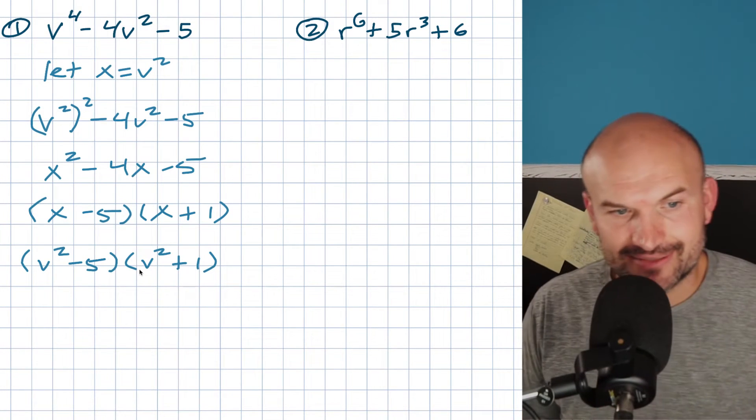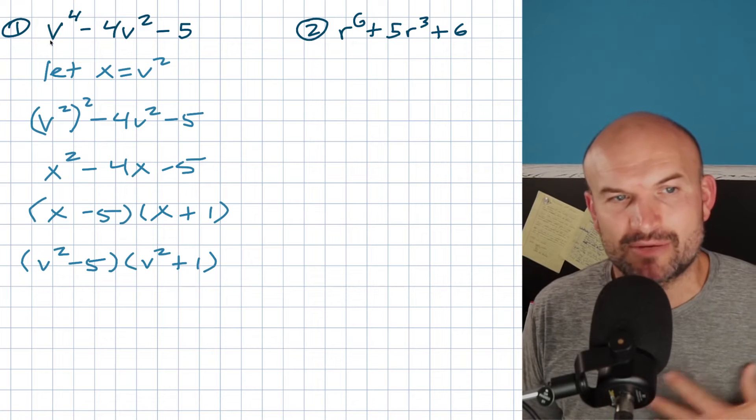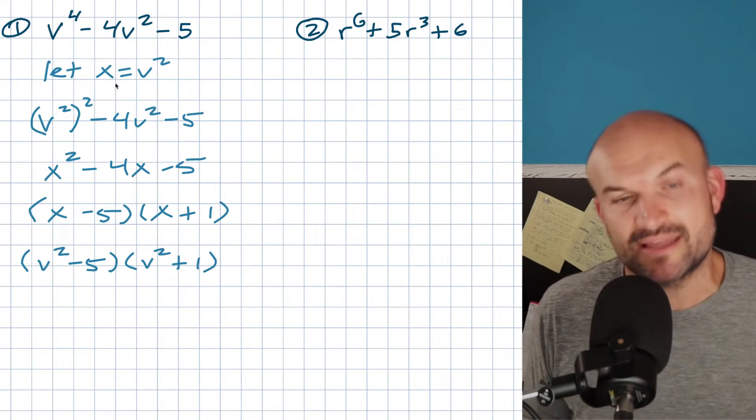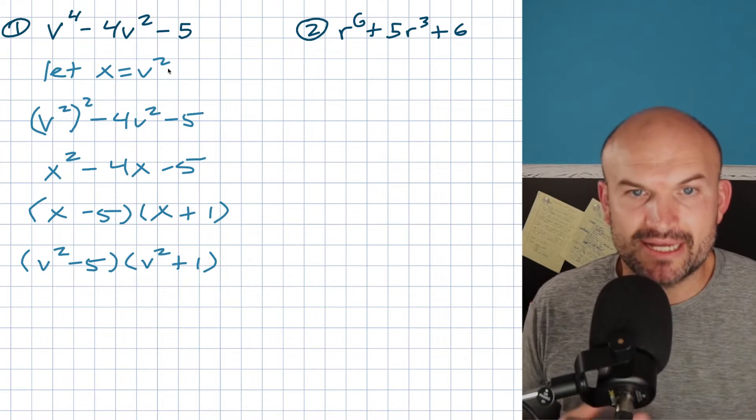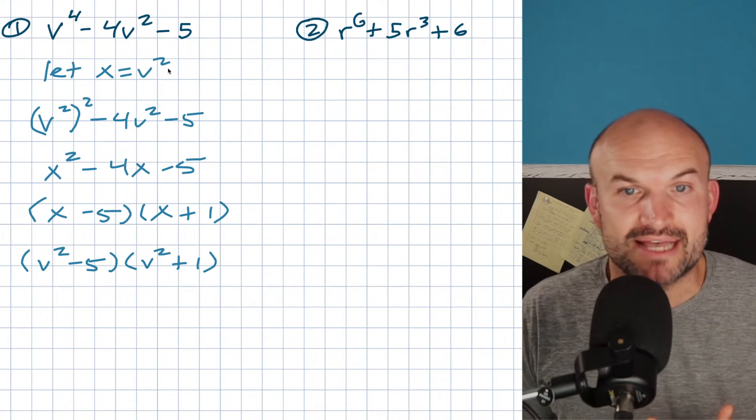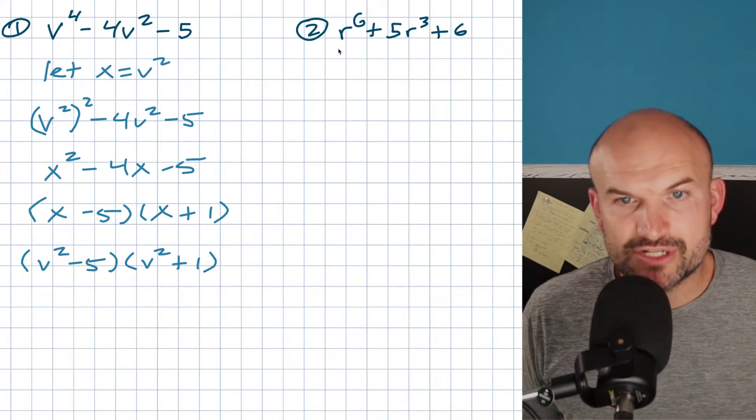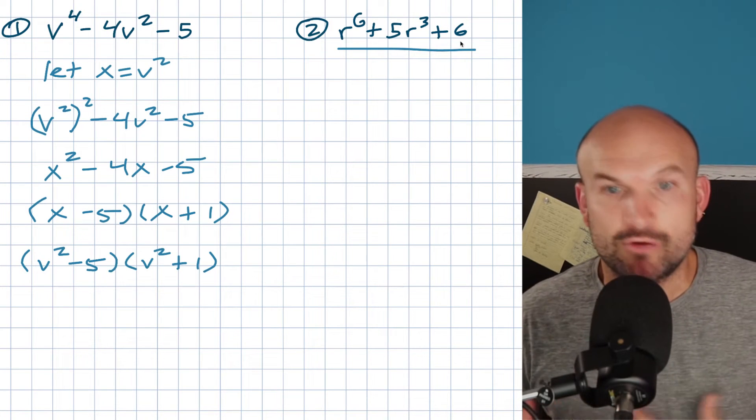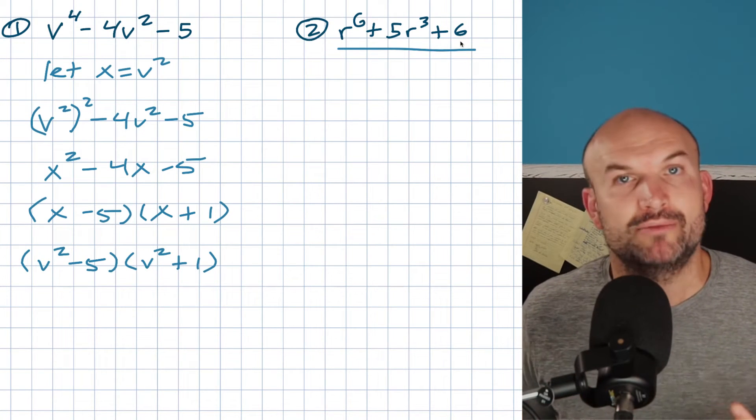Now, hopefully that's kind of simple, but I think sometimes when you're doing substitution, which this method is called, it still can be confusing. So let me give you maybe a different approach. What I want you to recognize is this kind of takes the shape of a quadratic, a quadratic trinomial. It looks very similar to it.